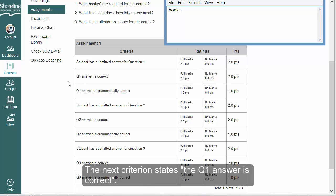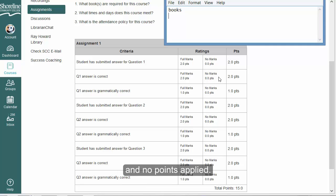The next criterion states that the Q1 answer is correct. We're going to presume that books is not a correct answer, so no marks would be given and no points applied.